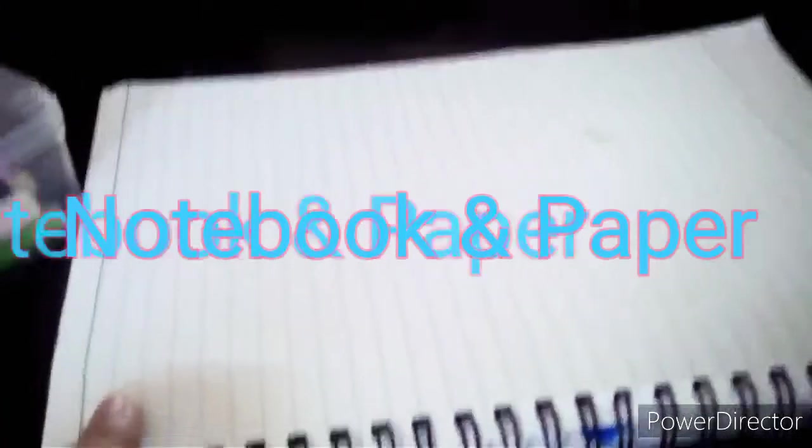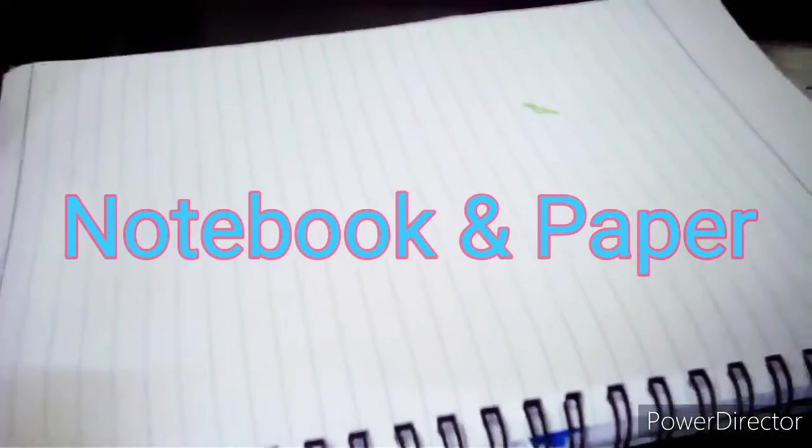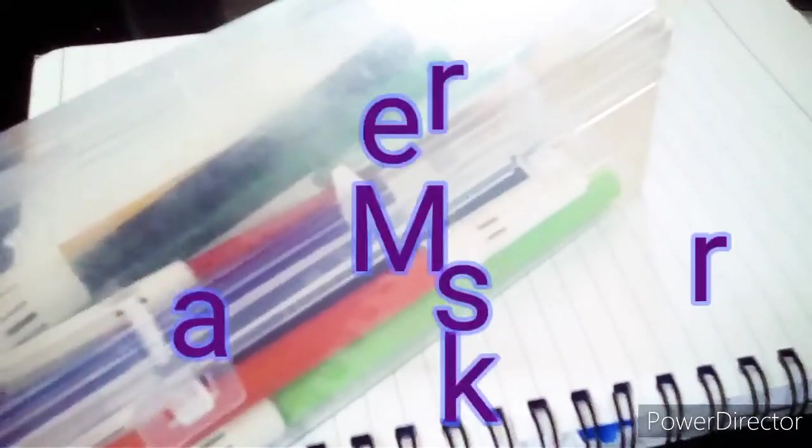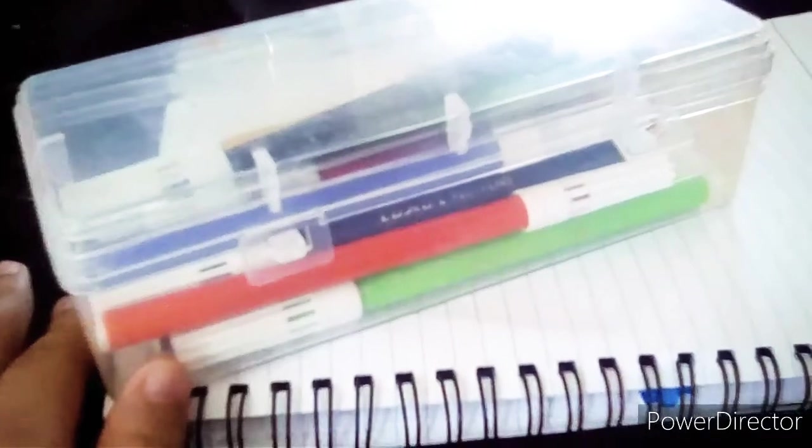So the first material that you have to get is a notebook or a paper, or any kind of paper that you can write or draw. And you can use markers or you can use pencils, but for me I have to do markers. So colorful markers and a paper. So let's choose the first color.